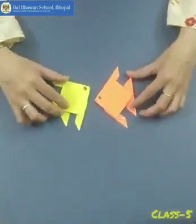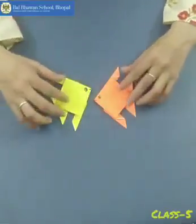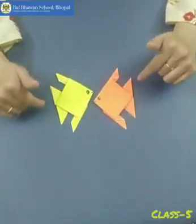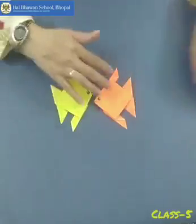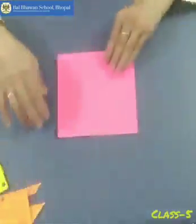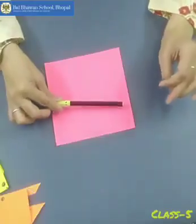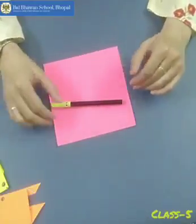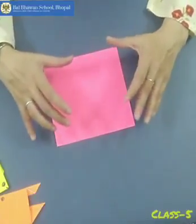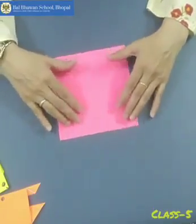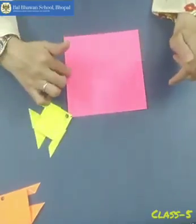You can make fish of different sizes and make an underwater sea scene. For this we need square paper and a sketch pen. The size of the square is up to you — it depends on how big a fish you want to make, but for this size we need a square paper of this size.